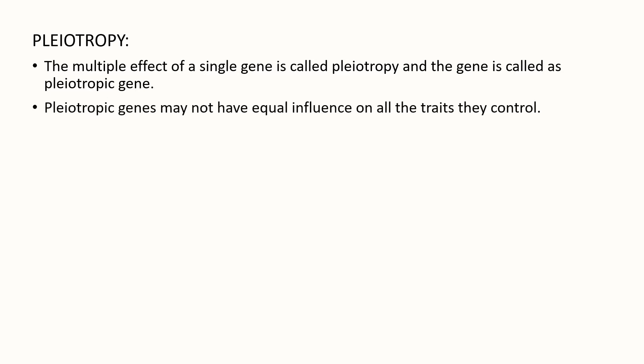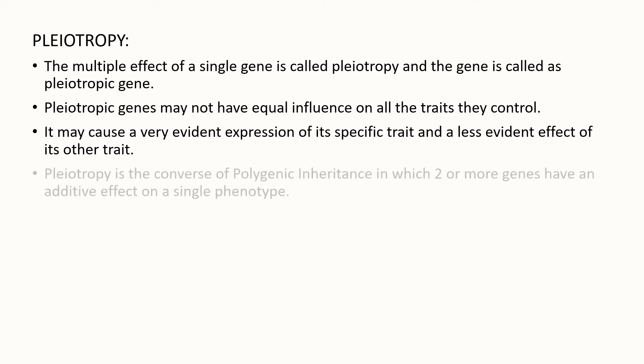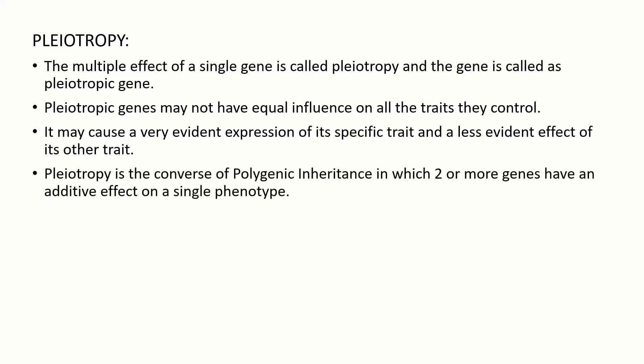Pleiotropy is the multiple effect of a single gene, and the gene is called a pleiotropic gene. These genes may not have equal influence on all the traits they control, but may cause a very evident expression of one specific trait and a less evident effect of another. Pleiotropy is the converse of polygenic inheritance, in which two or more genes have an additive effect on a single phenotype.